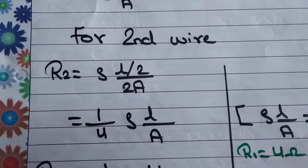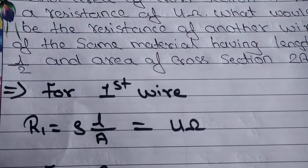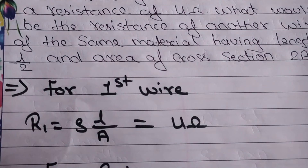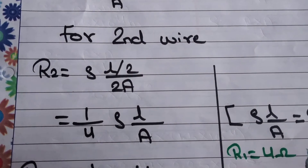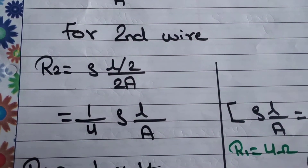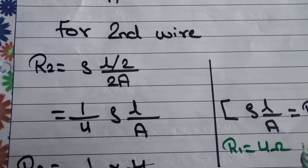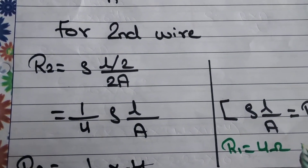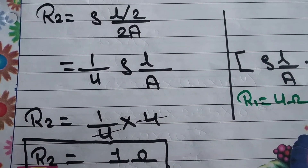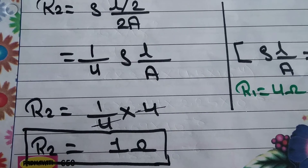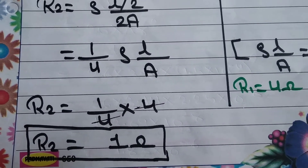From the first wire condition, rho L upon A equals R1 equals 4 ohm. So substituting, R2 equals one-fourth into 4. The 4 cancels with the 4, so R2 equals 1 ohm.